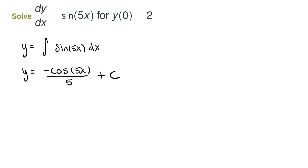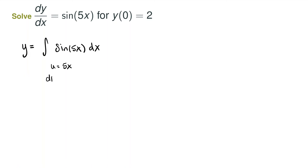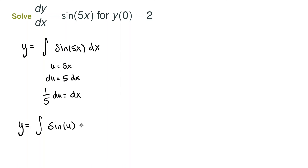If that result was instinctive, great. For a quick review using u-substitution: let u equal 5x, then du equals 5 dx. We only have dx in our integral, so we divide both sides by 5 to get 1/5 du. Substituting, y equals the integral of sine of u times 1/5 du. Pulling the constant out front and integrating, the integral of sine is negative cosine, so y equals negative 1/5 cosine of u plus C, and substituting back gives y equals negative cosine of 5x over 5 plus C.